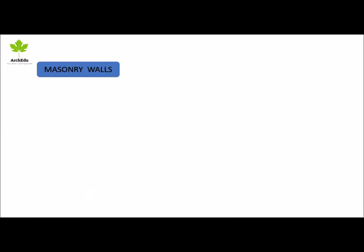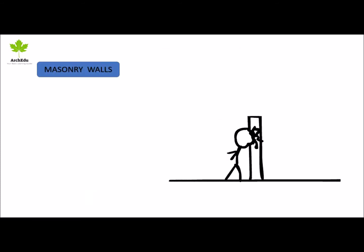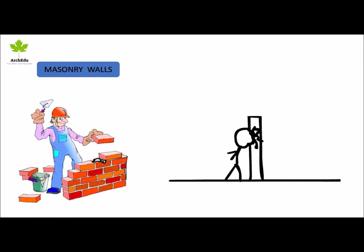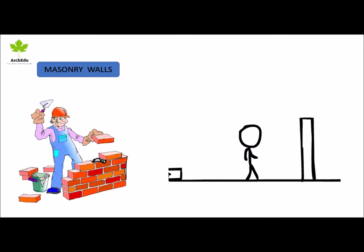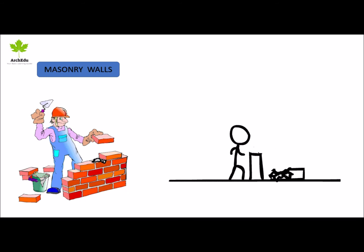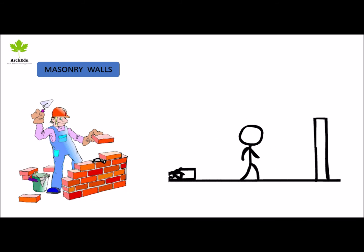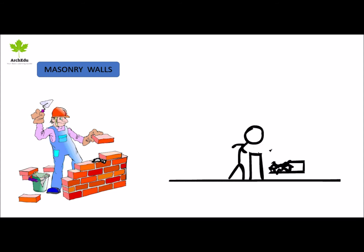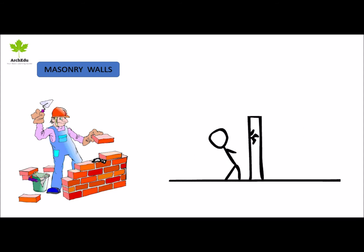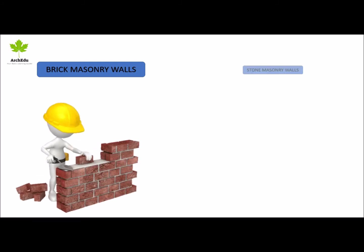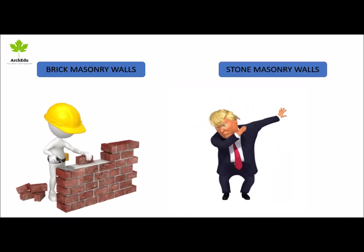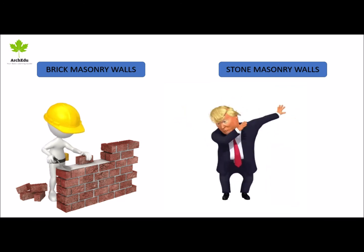Masonry walls: load-bearing masonry walls are constructed with bricks, stones, or concrete blocks. These walls directly transfer loads from the roof to the foundation and can be exterior as well as interior walls. In masonry walls there are broadly two types: brick masonry wall and stone masonry walls.